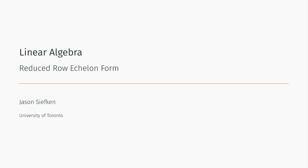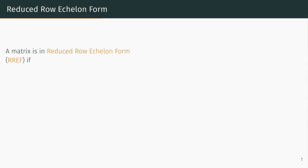In this video, we will discuss what it means for a matrix to be in reduced row echelon form, as well as some related vocabulary. The result of applying Gauss-Jordan elimination to a matrix is a matrix in reduced row echelon form.